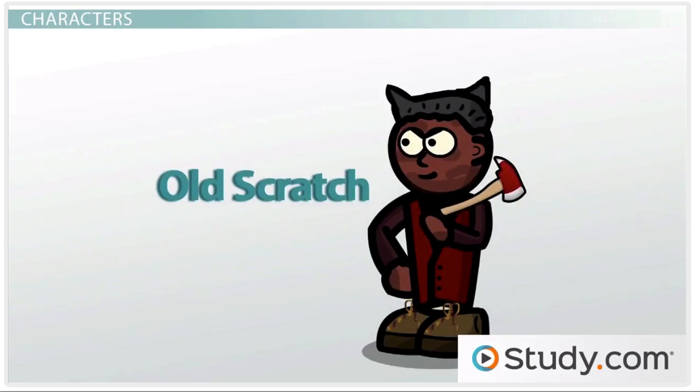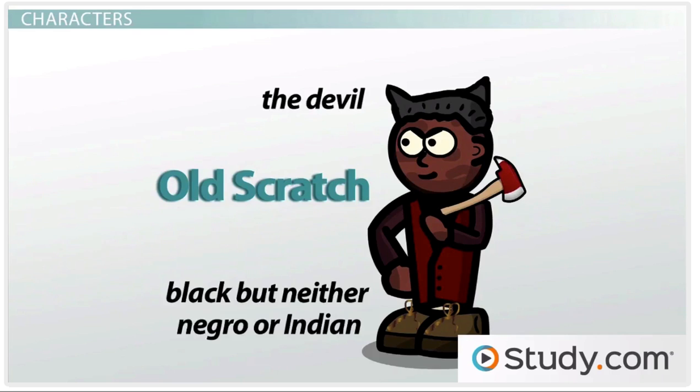Old Scratch is given several names in the story, including wild huntsman and black woodsman. He is the devil. Described as a black man, but neither negro nor Indian, he has a dirty, soot-covered face and carries an axe. Keep in mind that he is a physical character in the story, like a person with supernatural powers.